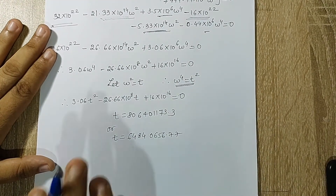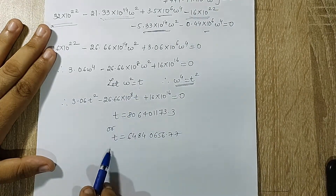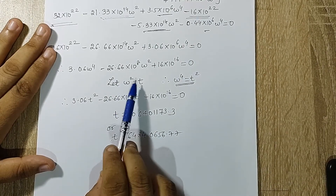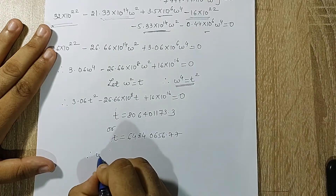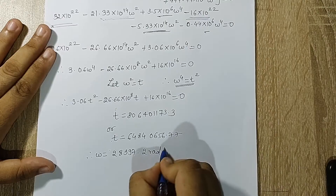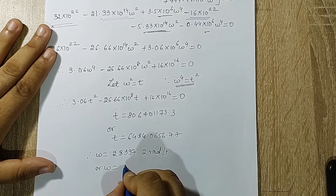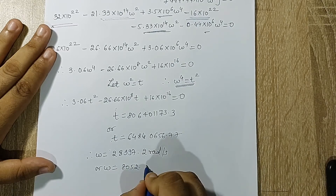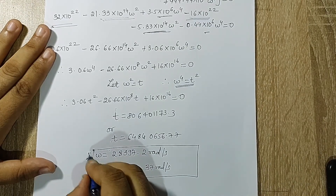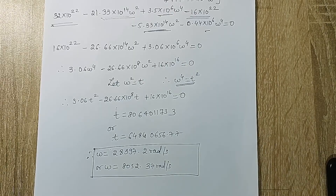Note that t is just a substitution variable, not time. Since ω = √t, we get ω = √806,401,173.3 = 28,397.2 rad/s, or ω = √64,840,656.77 = 8,052.37 rad/s. These are the two natural frequencies of the bar calculated using the FEA method.